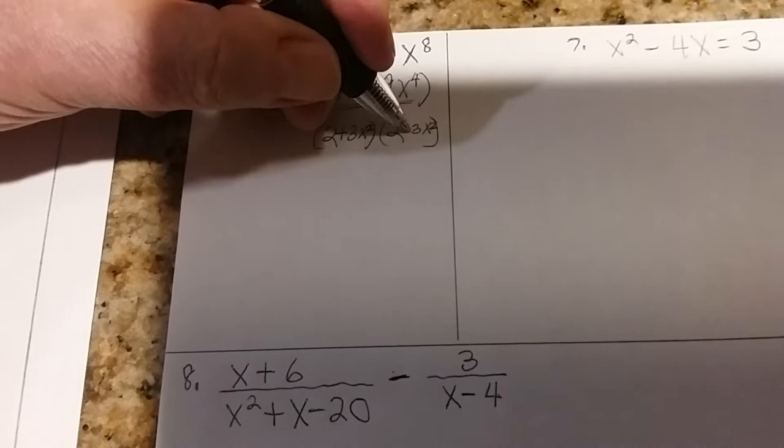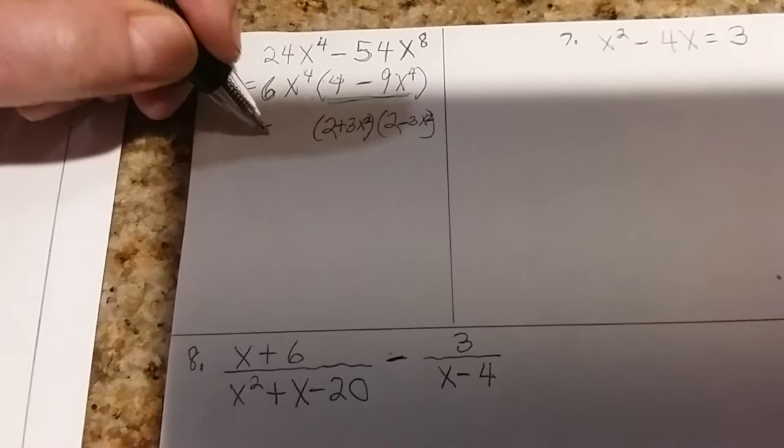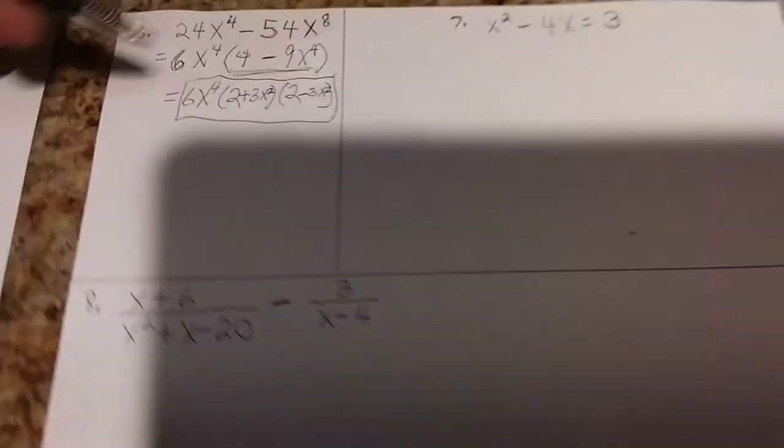And then one plus and one minus. Remember, we're using the method of doing difference of two squares. 6x4, you bring it down. And all this would be your answer. So make sure you practice factoring. That's the type of question you should definitely know.